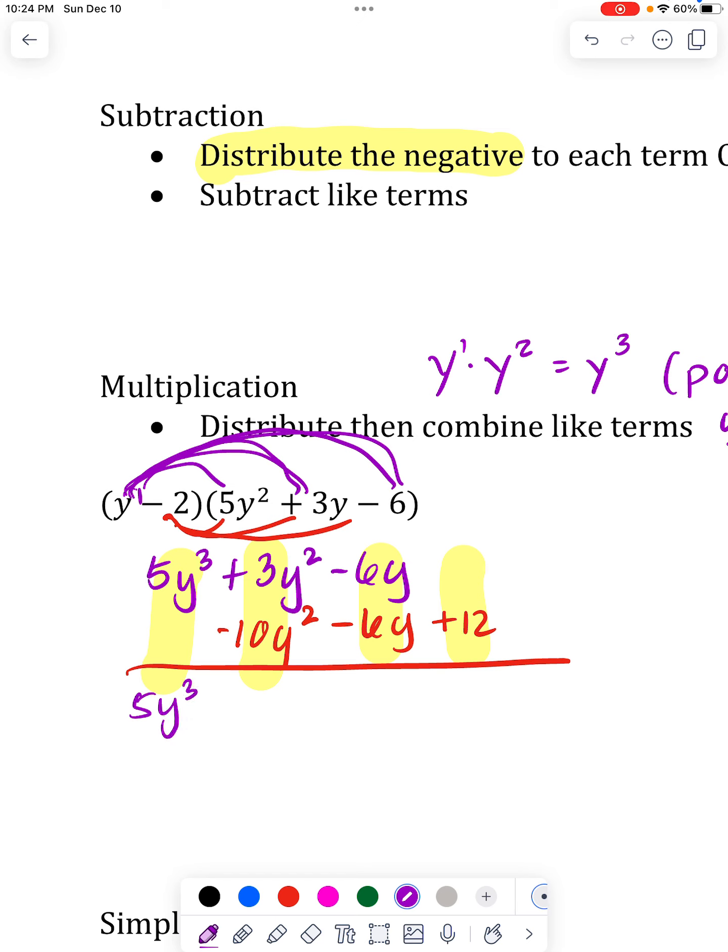In this second column, 3 minus 10 is -7y². And at this point I am not changing the signs because I'm just combining like terms.